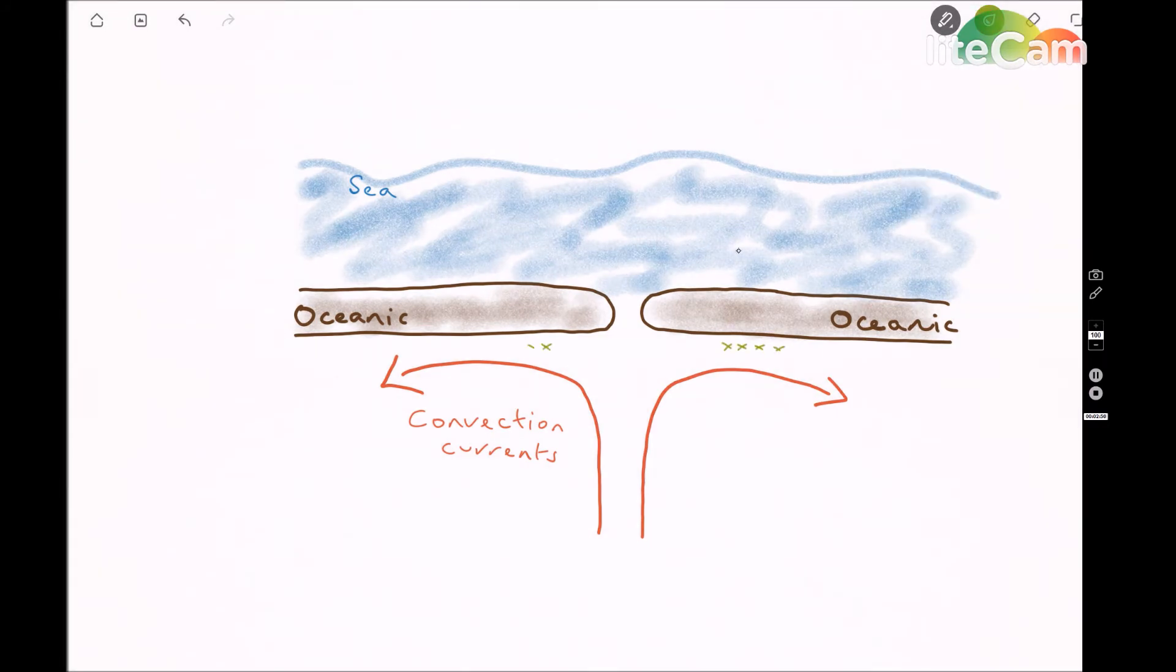on either side they move outwards and the friction that they generate between the oceanic plate and the moving magma of the convection currents pulls the two oceanic plates apart. It's basically part of the theory of plate tectonics.